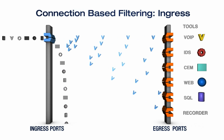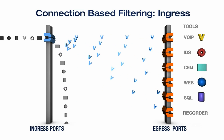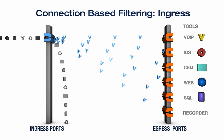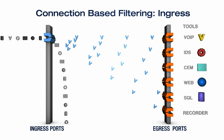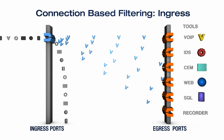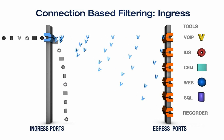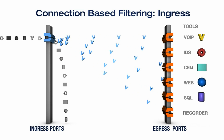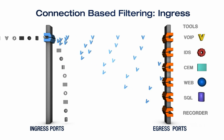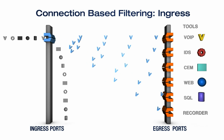Connection based filtering on the input or ingress ports immediately eliminates all other traffic from ever being used. For example, when a voice over IP recorder is the desired destination, only VoIP packets can be delivered by the filter. Therefore, all other packets are dropped or ignored, as seen on the left hand side of the screen. So if another tool needs to see the web traffic, it's too late — the traffic is gone.